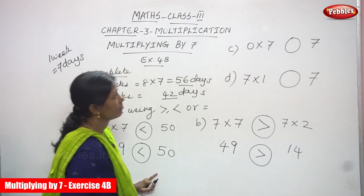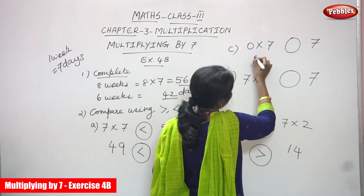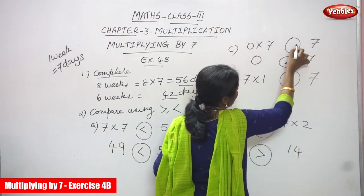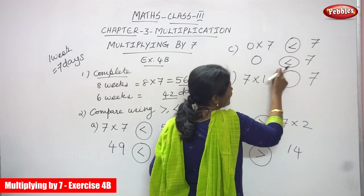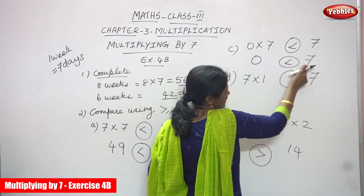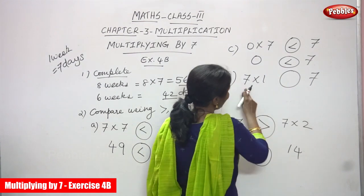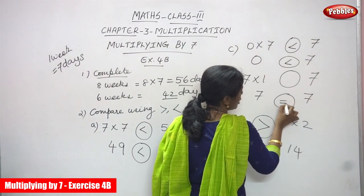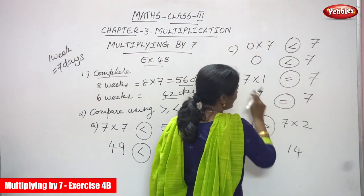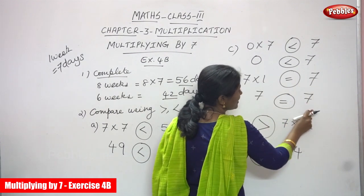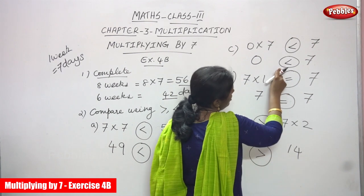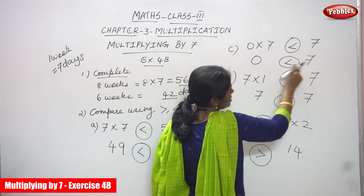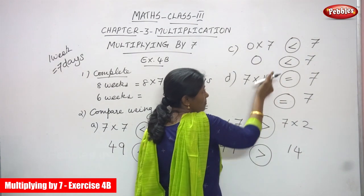Here 49 is less than 15. Then 0 into 7 — you get 0. So you draw the circle: 0 is less than 7. The answer uses the narrow mouth, which is the less-than sign. And 7 ones are 7 — here also the answer is 7, so both numbers are the same: equal sign. 0 compared with 7 — 0 is less than 7, so I use the narrow mouth, which is the lesser sign.